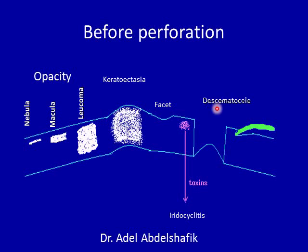Another problem is descematocel. If the necrosis gets deep with loss of tissue, we are left with Descemet's membrane. This membrane at the bottom of the area will bulge under the effect of intraocular pressure, forming a dome-shaped membrane at the bottom of the ulcer — this is descematocel. If Descemet's membrane is also injured, we get a through-and-through perforation.